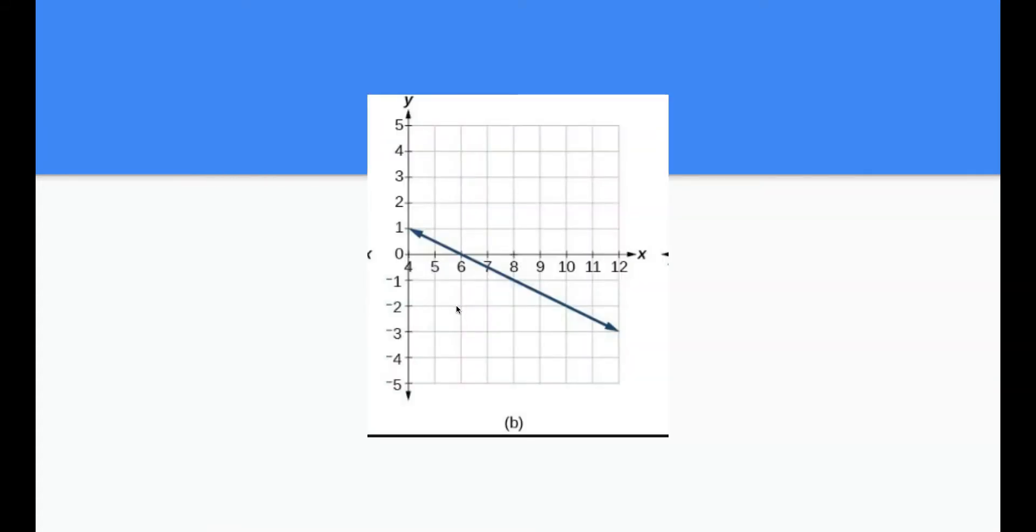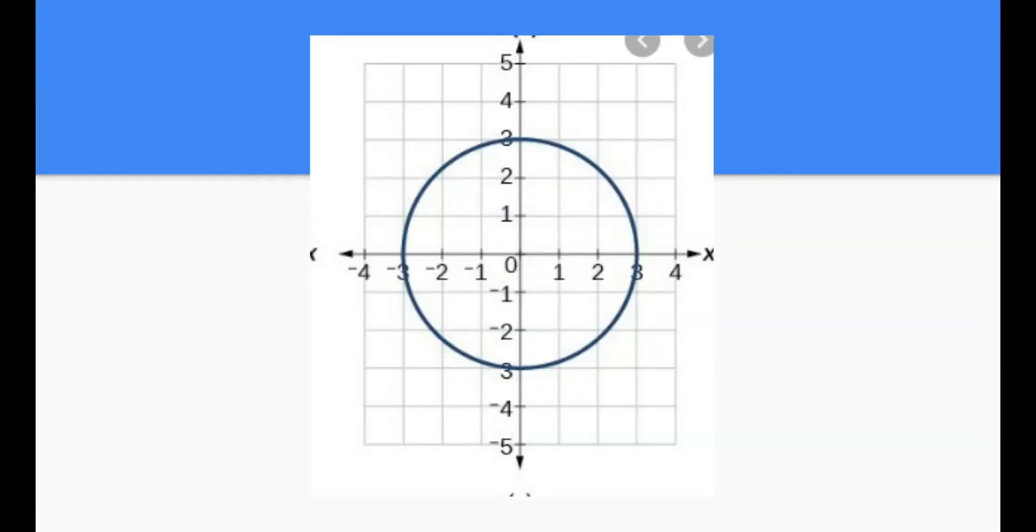This of course is a function. It is a diagonal line going down. It's not going to connect vertically anywhere. And this one would be not a function because on this circle we can draw vertical lines everywhere and there's going to be a lot of connections.